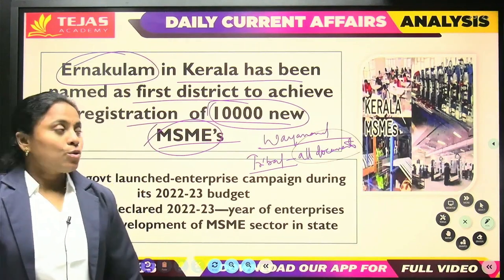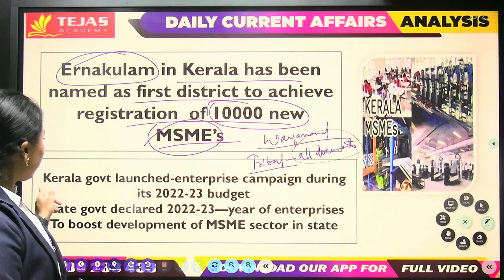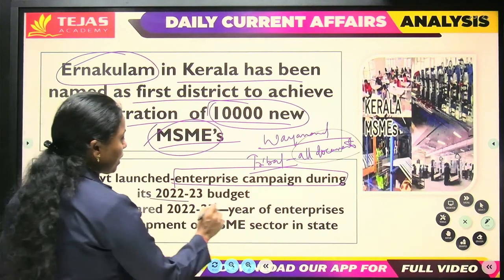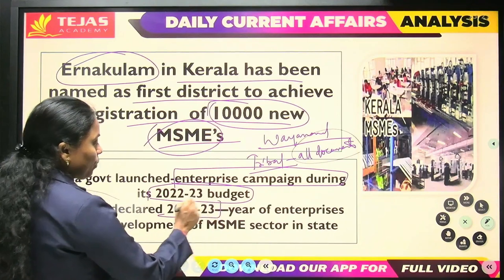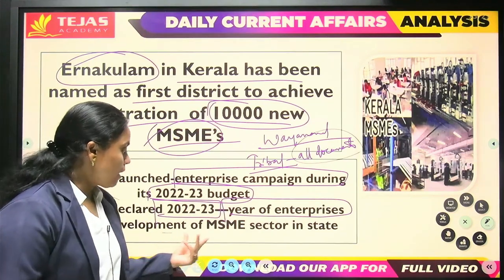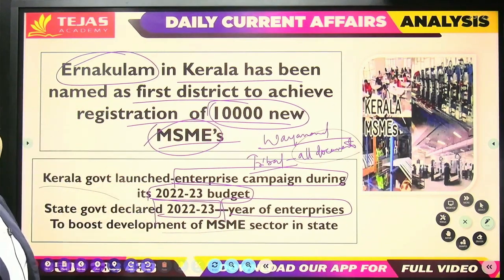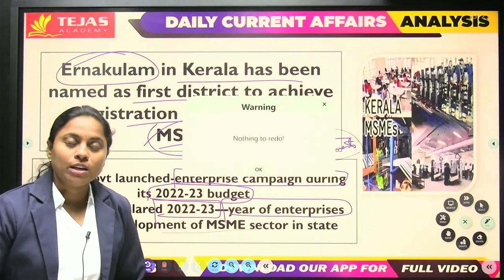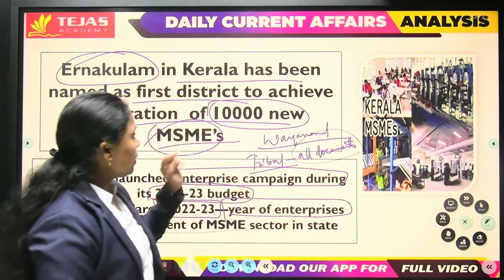10,000 new registrations of micro, small, and medium enterprises — it is not simple. This high exponential growth in MSME registrations happened because the Kerala government launched an enterprise campaign. The 2022–2023 budget was declared as the 'Year of Enterprise' budget by the Kerala government, which boosted the MSME sector. MSMEs contribute to larger economic generation — not only for employment, but also for increasing domestic goods production and economic generation.